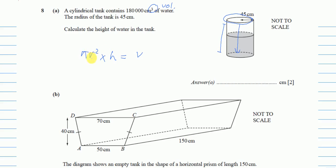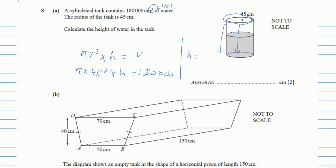For this question we use π = 3.142, so: 3.142 × 45² × h = 180,000. π and 45² are multiplied with h, so dividing the right-hand side gives h = 180,000 ÷ (45² × π) = 28.29... To three significant figures, h = 28.3 centimeters.